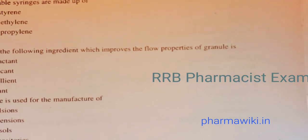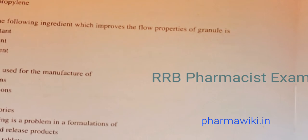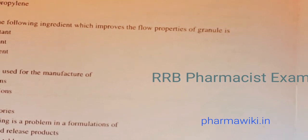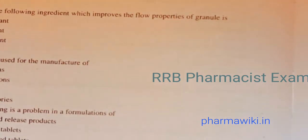Question 13: Propane is used for the manufacture of — emulsions, suspensions, aerosols, or suppositories. The answer is C, aerosols. Propane is used for the manufacture of aerosols.